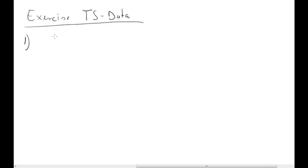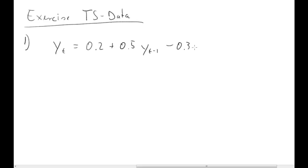Question one: we have estimated a particular AR process and you're given the results, so you know the parameters already. You know that you can estimate these parameters by OLS. This is an AR process: 0.something plus 0.3 times y(t-2) plus epsilon(t). And we know it's a stationary process — the coefficients sum to less than one.